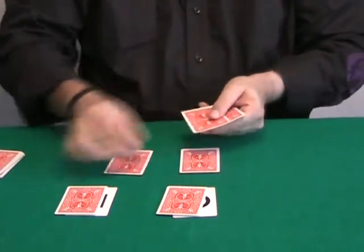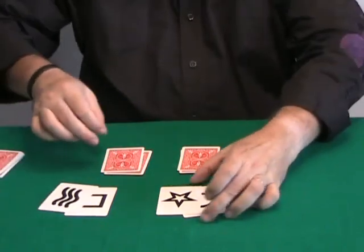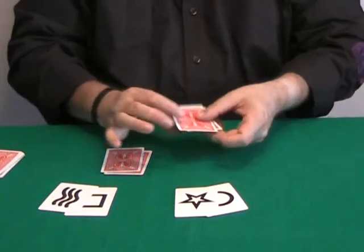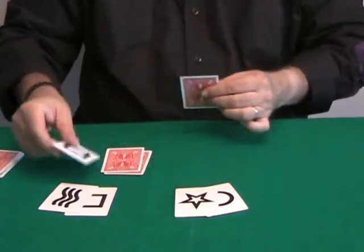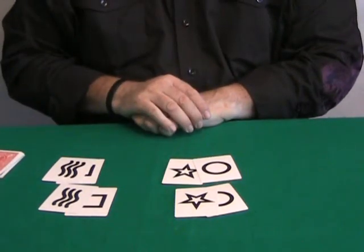Four cards. Watch. One, two, three, and four. These are the two cards selected - two and two, four. And these are the cards I picked from each packet.